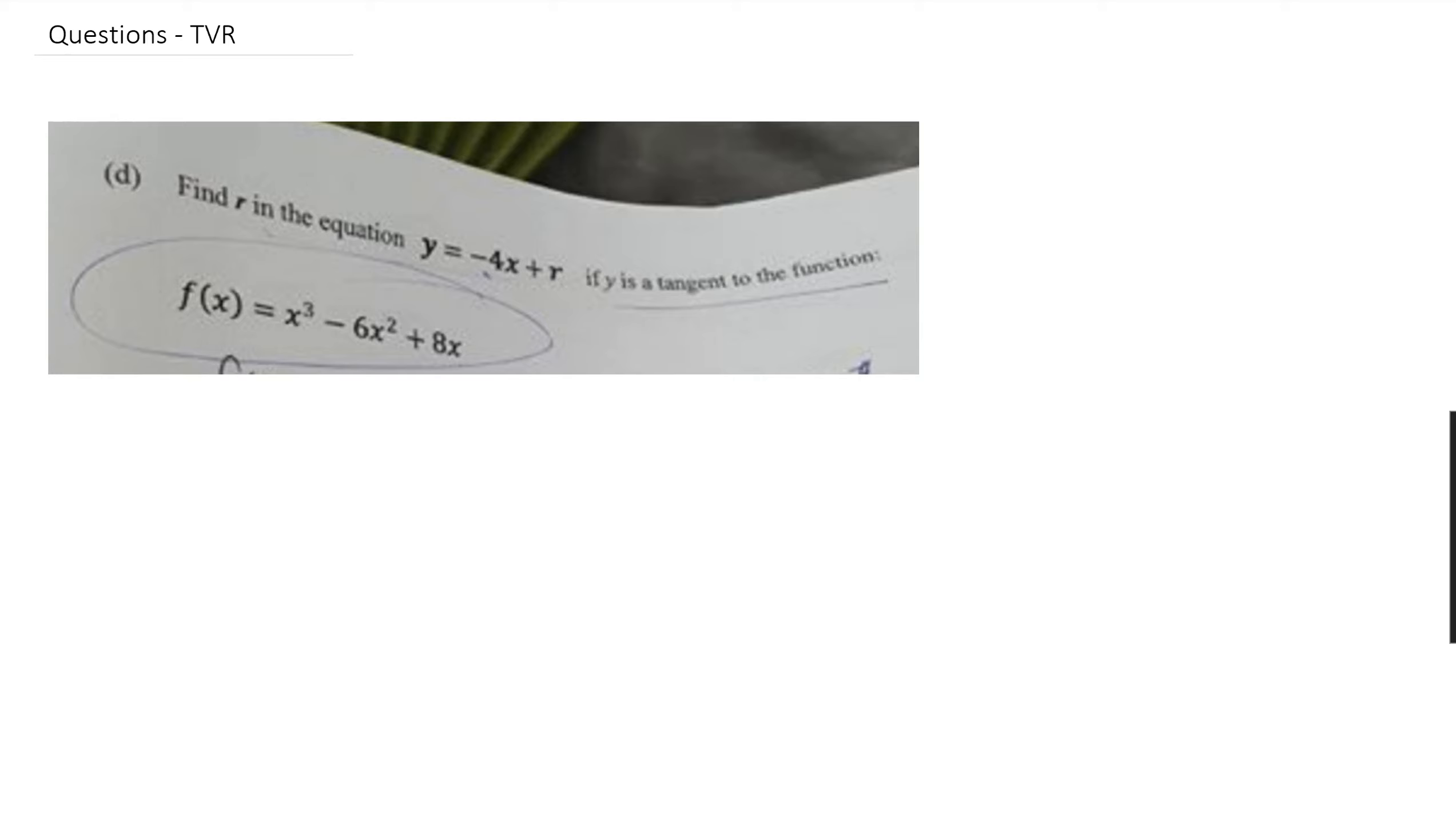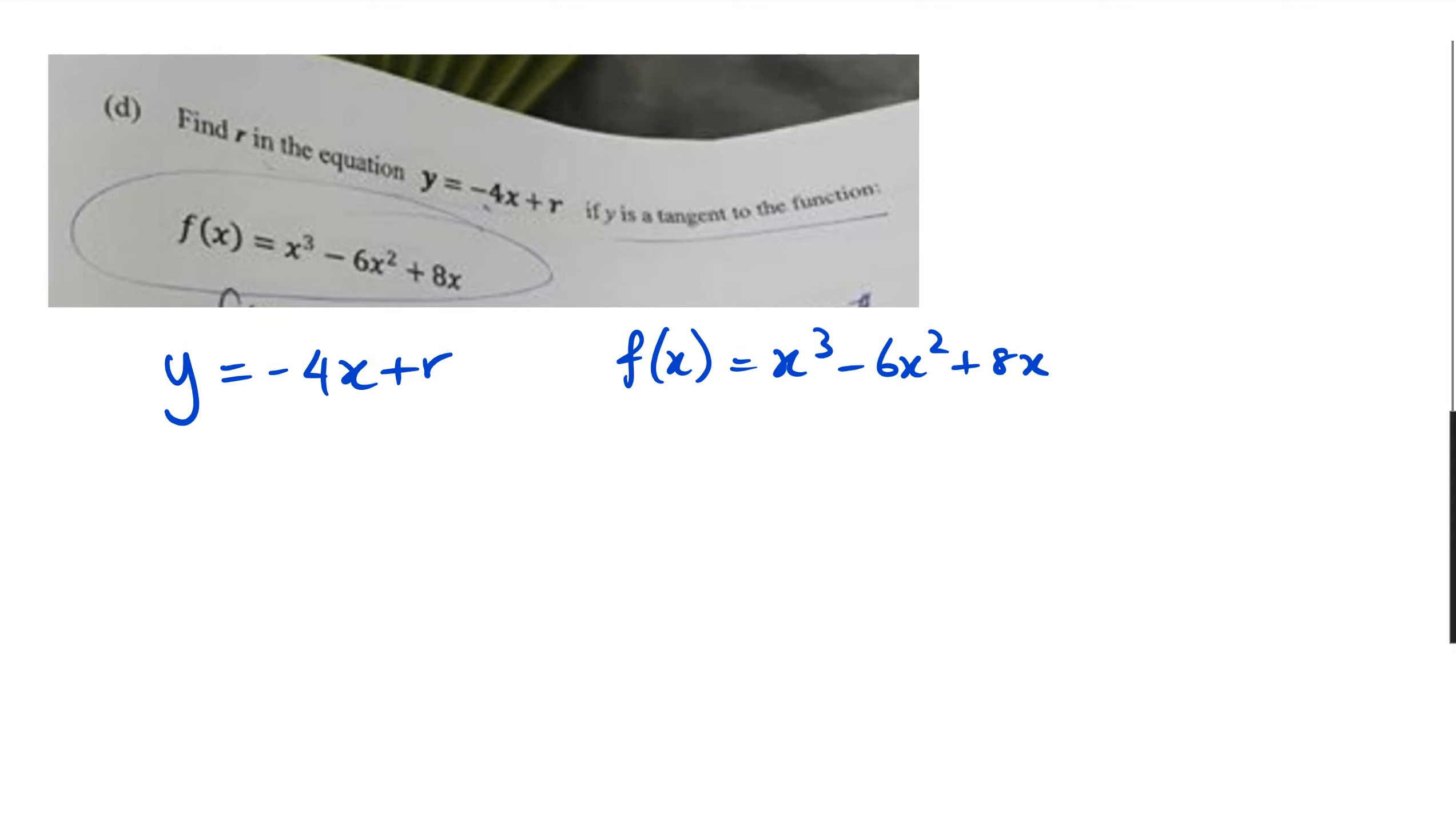What we've got here is—I don't know if you guys can read the question properly, but that's the best screenshot I got from the student. We've got: find r in the equation where y equals negative 4x plus r, if y is a tangent to the function f(x) = x³ - 6x² + 8x.